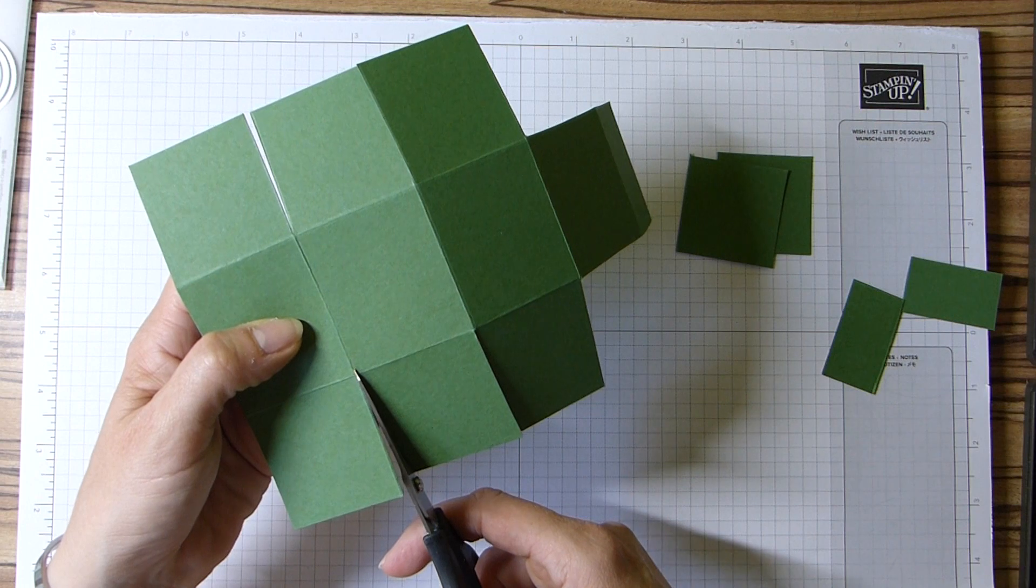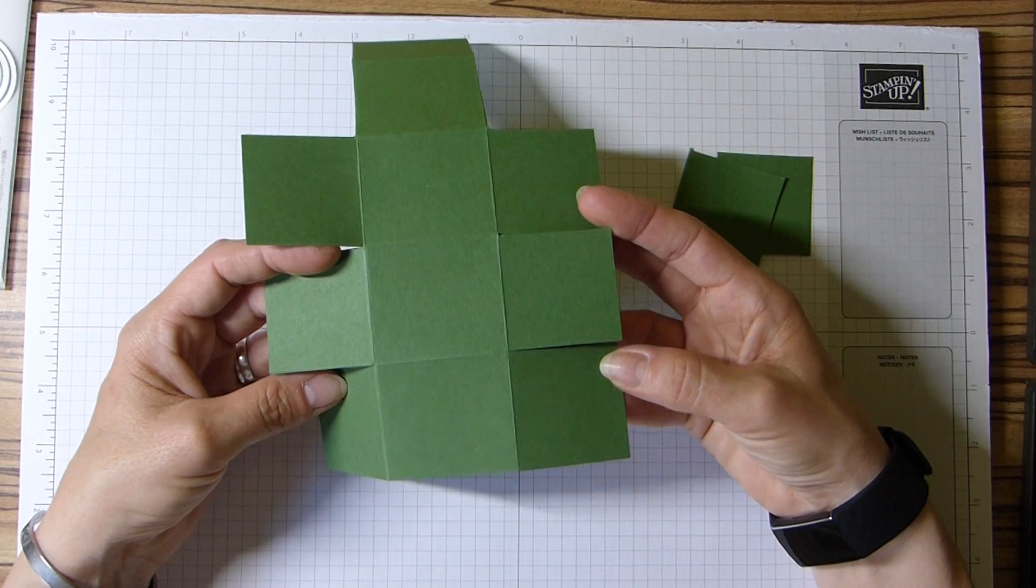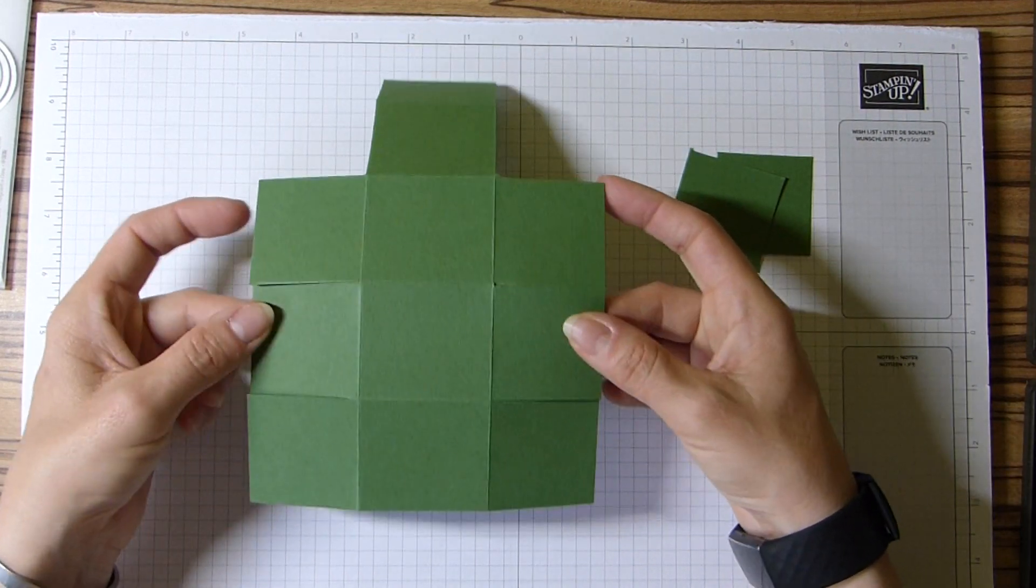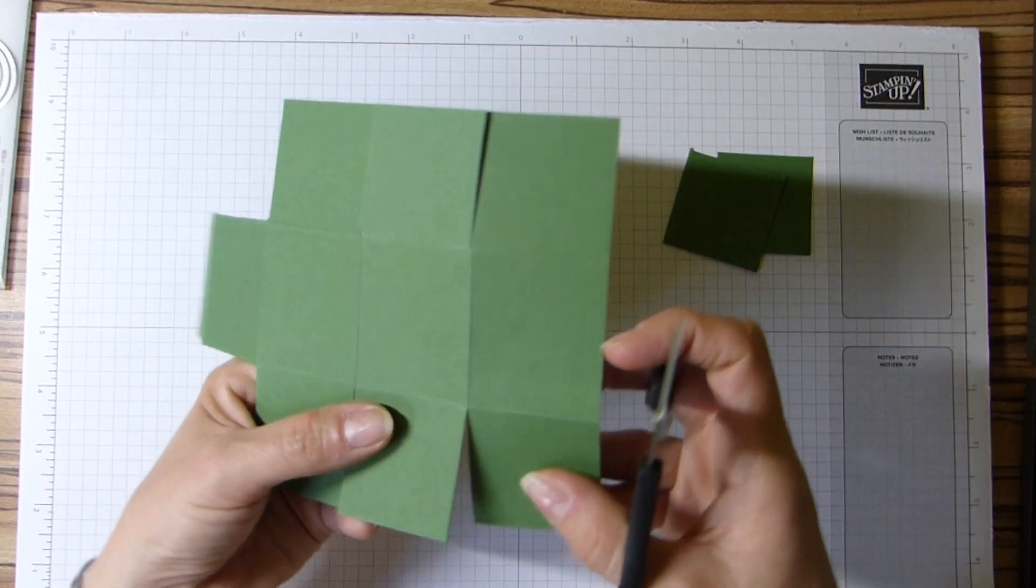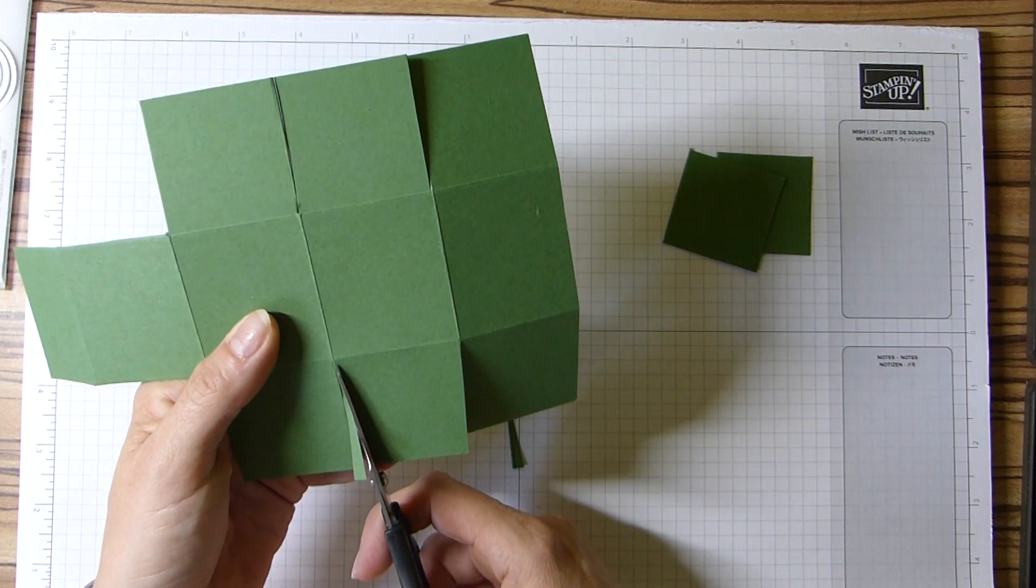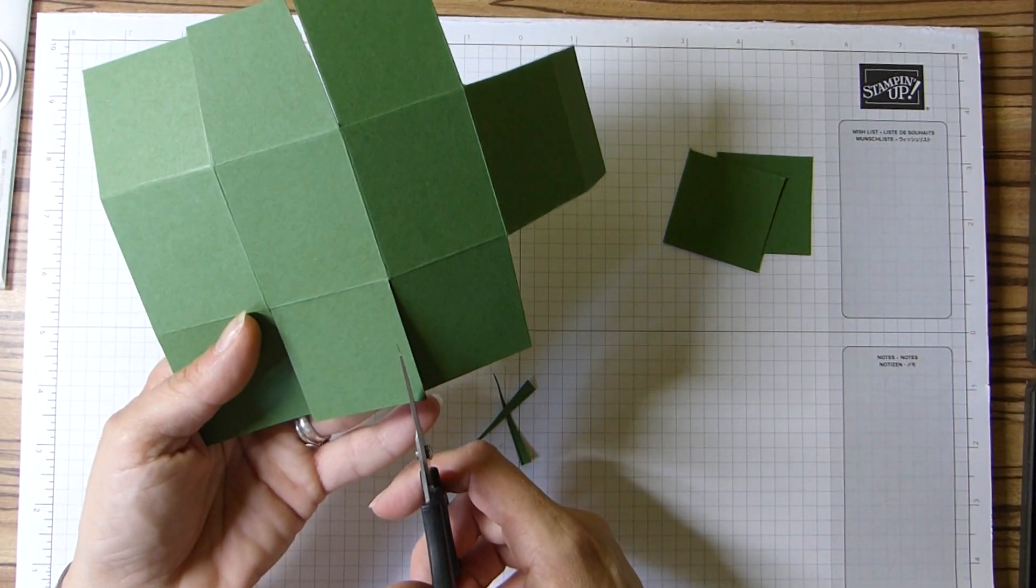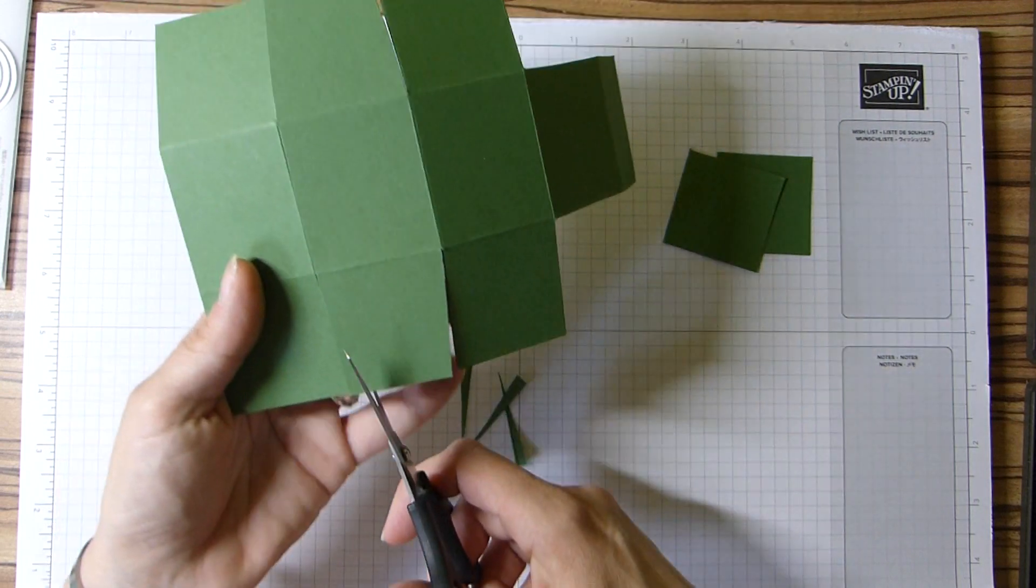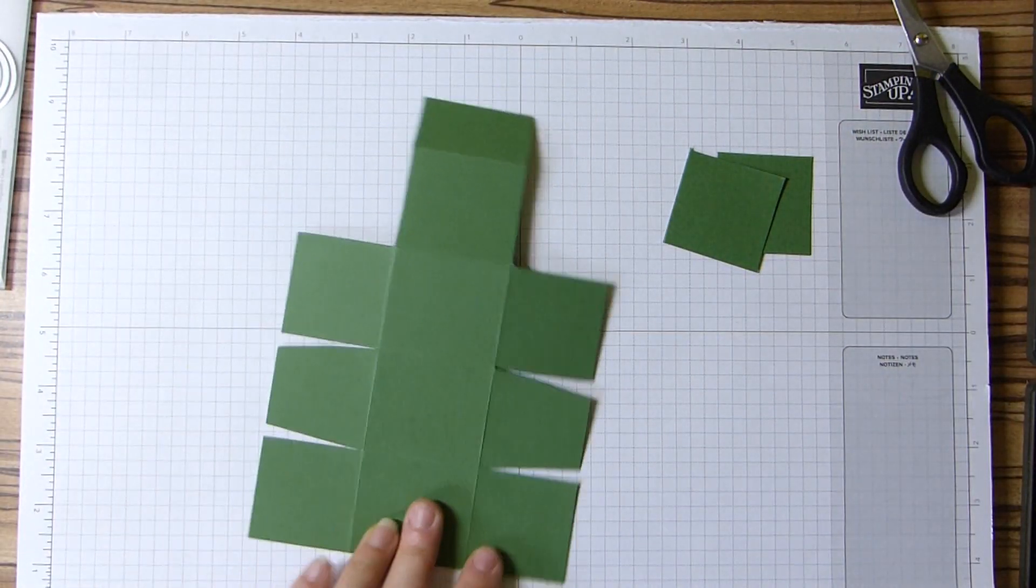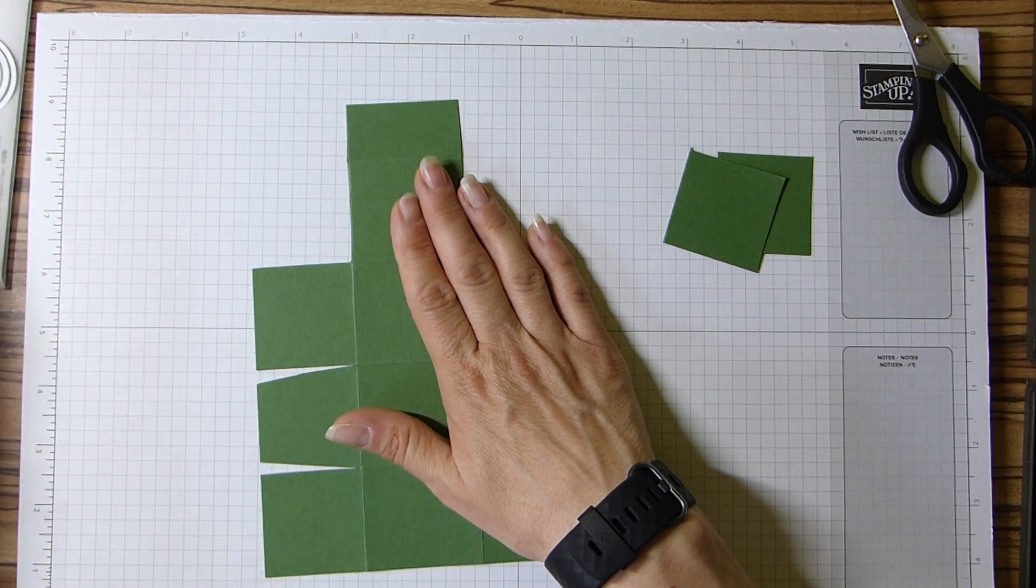So you should now be left with this shape, and these parts are all separated. Then the middle one here, we are going to cut some wedges out of, and the same on the other side.